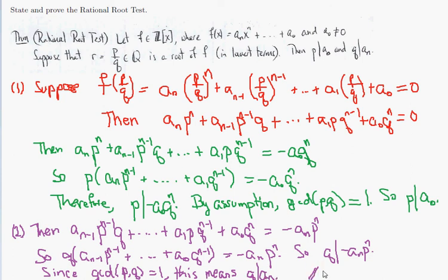The basic idea is that we plug in p/q, isolate either the very first term or the very last term, and then follow our noses by factoring the remaining terms.